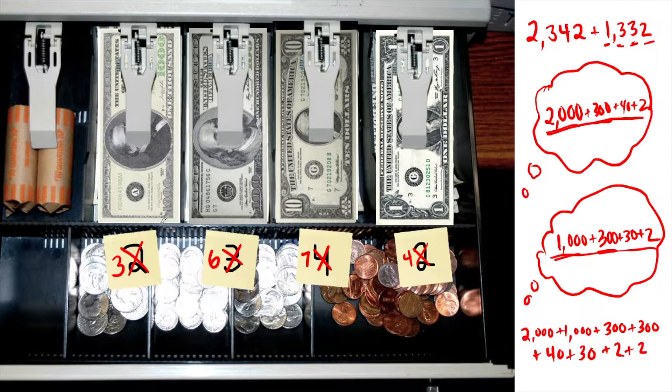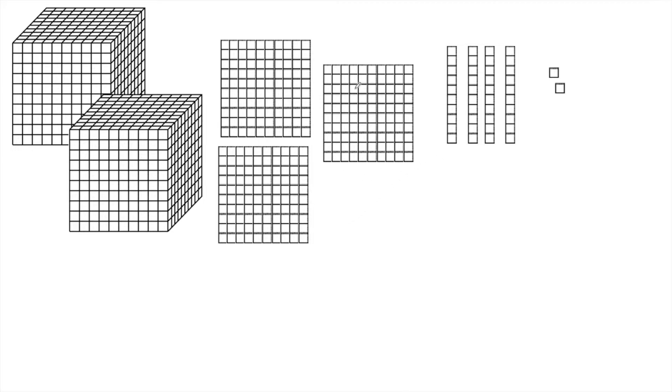And the order doesn't matter. I could have added the $1,000 bills first and then the ones as long as I change my digits. Let's think of it instead with these place value blocks. Here I have 2,342. I'm going to write it out in expanded form there on the bottom.